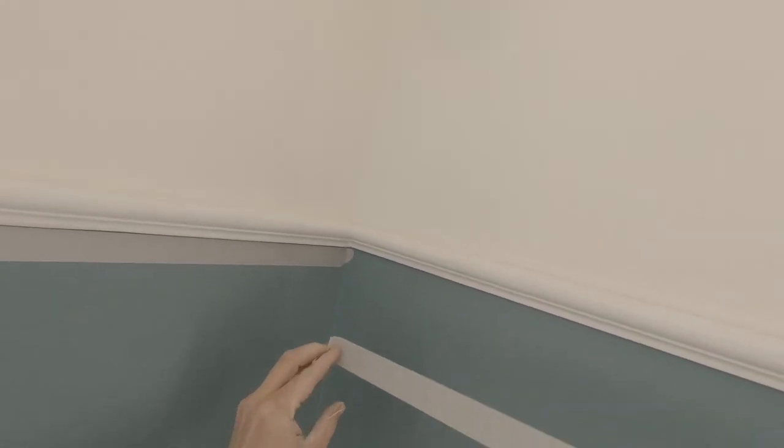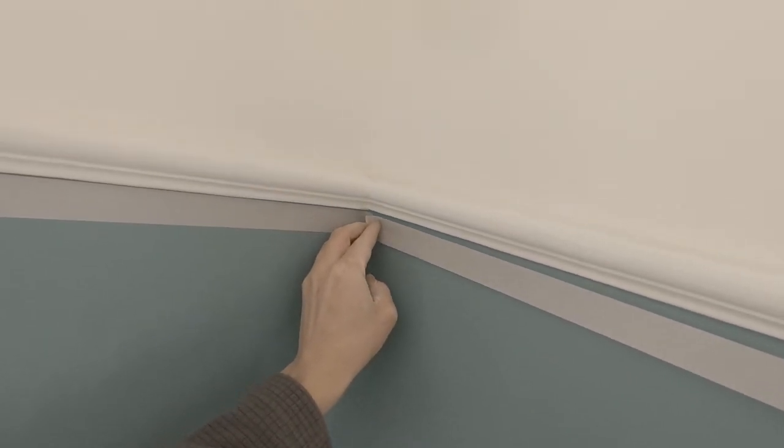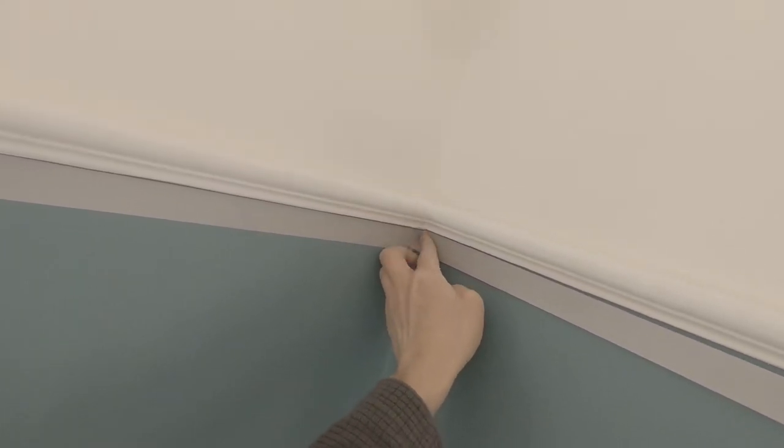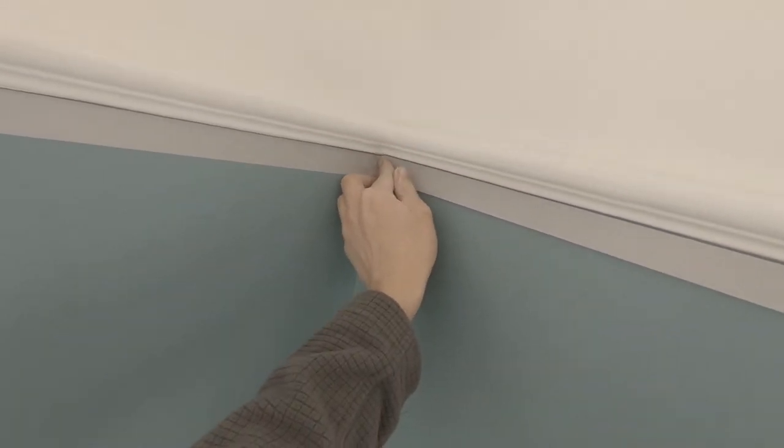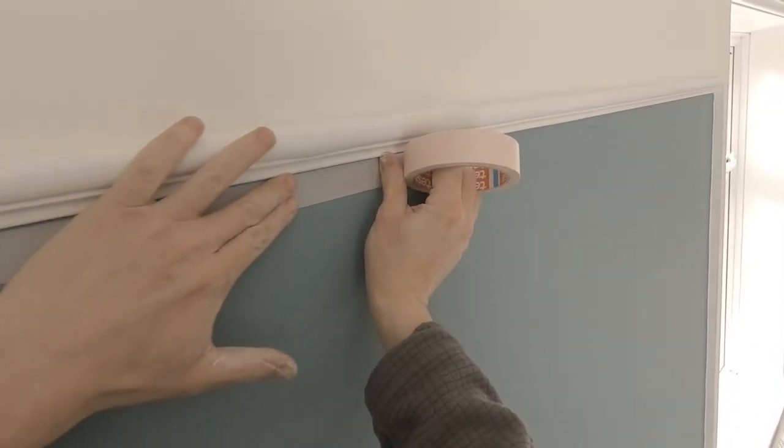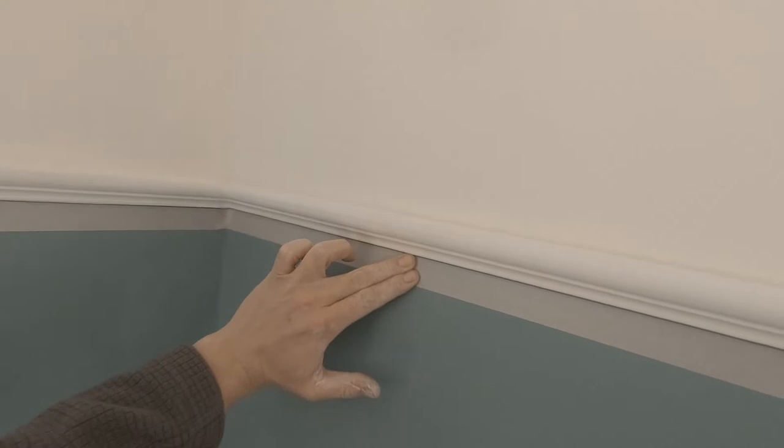Now we're going to start again coming from that other corner, and we're going to come back right across this piece here. I'll sort that little bit of imperfection out there in a minute once we've got this length on, again getting nice and close to the top of that picture rail.